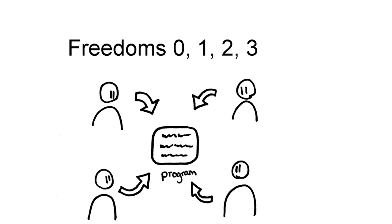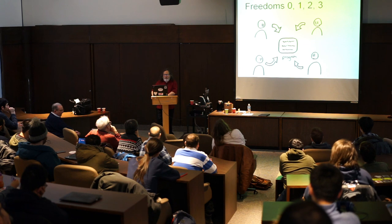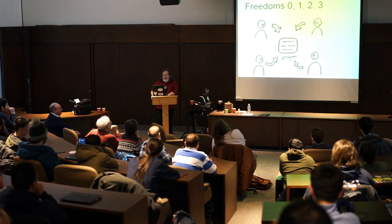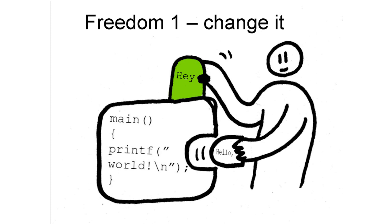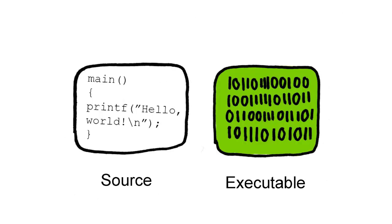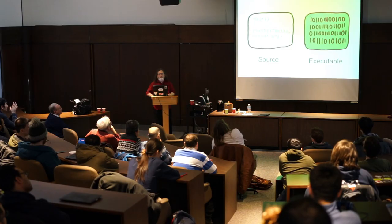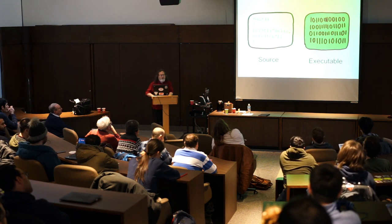In practical terms, for users to control the program they need the four essential freedoms. Freedom zero is the freedom to run the program any way you wish for any purpose. Freedom one is the freedom to study the program's source code and change it so it does your computing the way you wish. Source code is like a mixture of English and math — if you learn the programming language, you can read it, understand what it does, and change it. But programs are generally converted into an executable: an enigmatic series of ones and zeros.